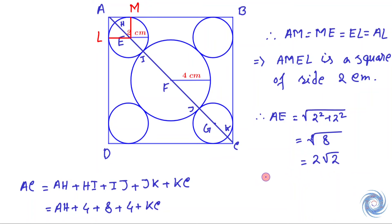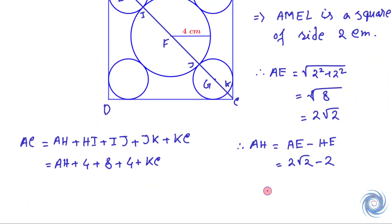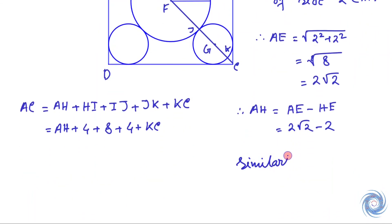Now we can calculate the length of AH. Using the similar technique, we can calculate the length of KC. Now from here, we have AH equals 2√2 minus 2 and KC equals 2√2 minus 2.